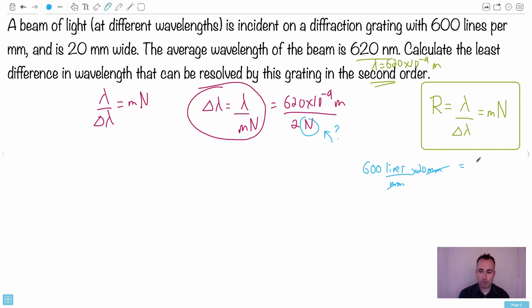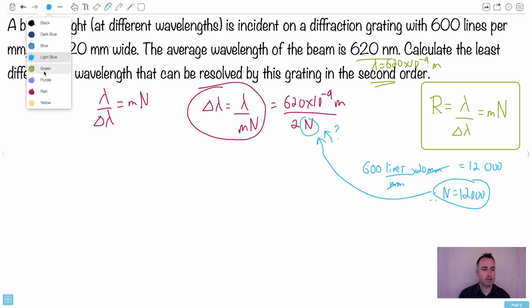So that's why I can say 6 times 2, which is 12, and then add 1, 2, 3 zeros to it. So I know that N equals 12,000. I have 12,000 lines illuminated here.